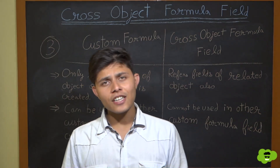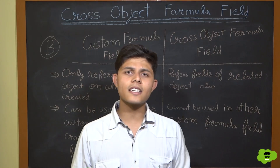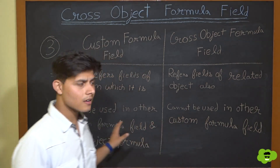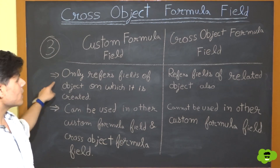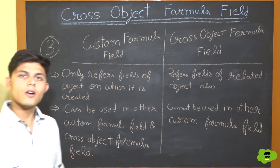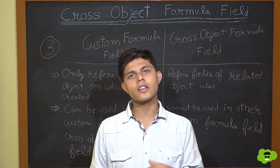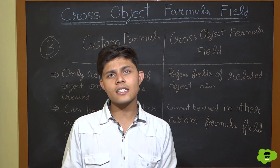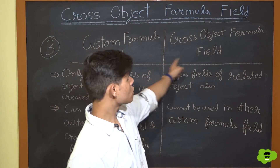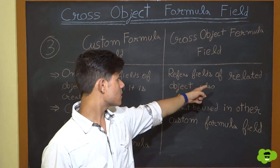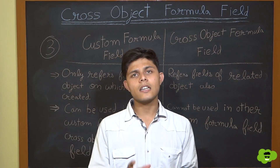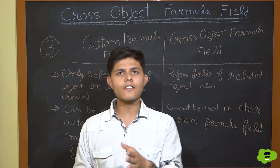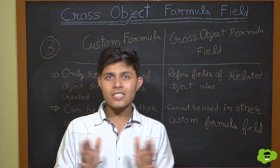Now let's look at the difference between a cross-object formula field and a custom formula field. A custom formula field only refers to fields of the object on which it is created — for example, a formula field on Contact that only references Contact fields. A cross-object formula field references fields of a related object as well, such as referencing an Account field from a formula field created on the Contact object.